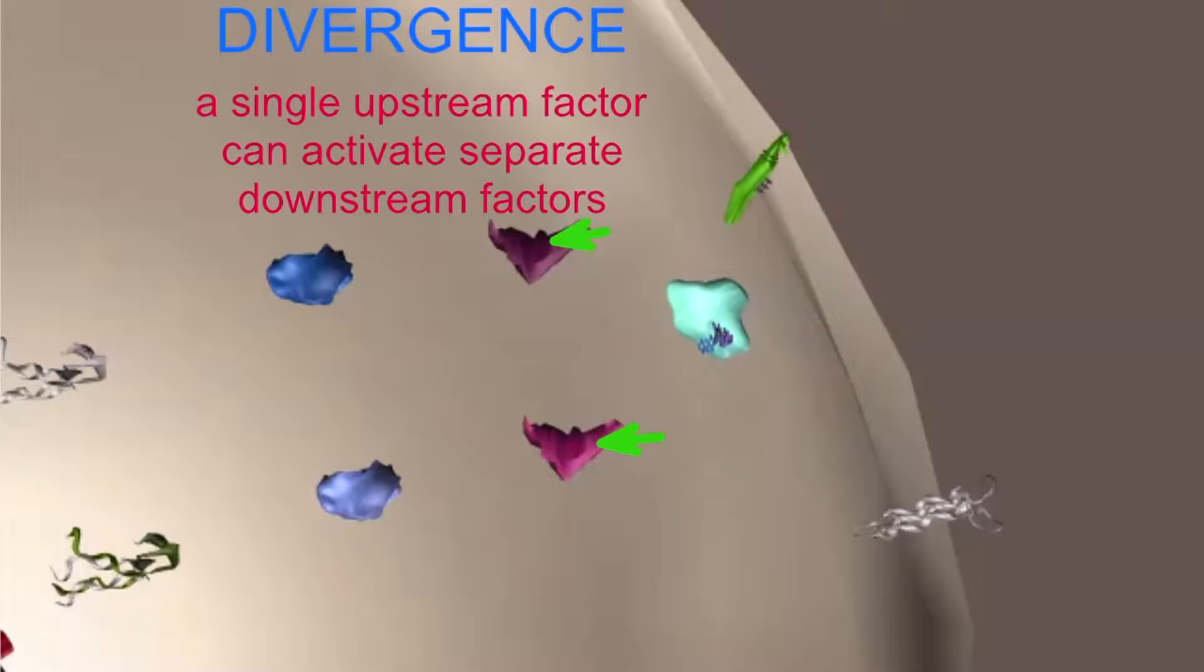During signal transduction, the process of divergence is observed at multiple distinct steps in the process.